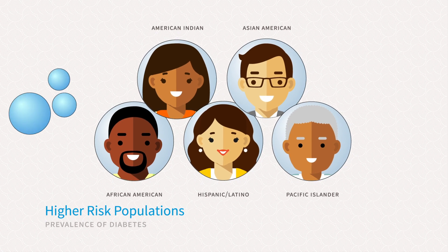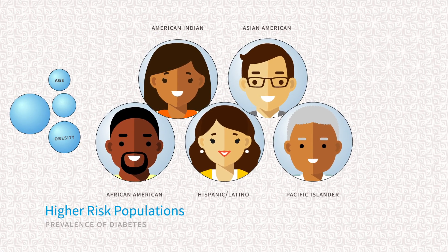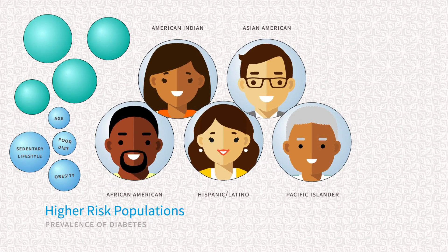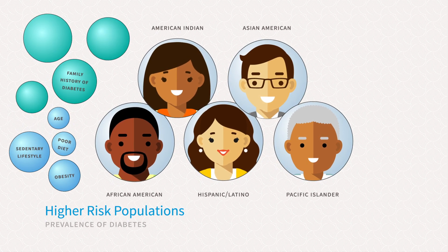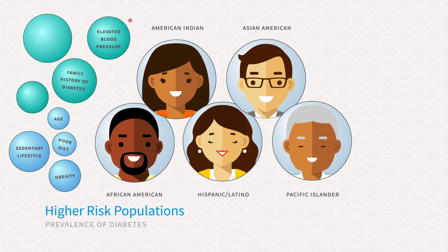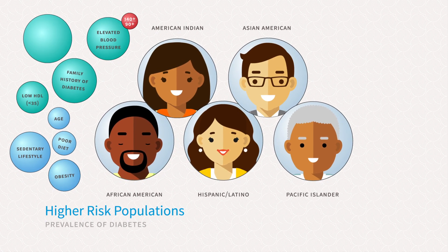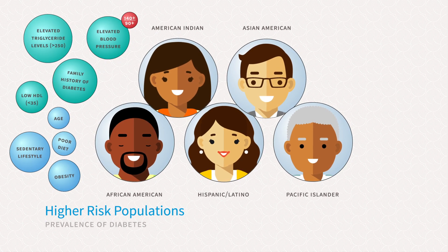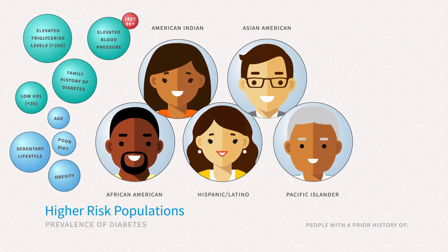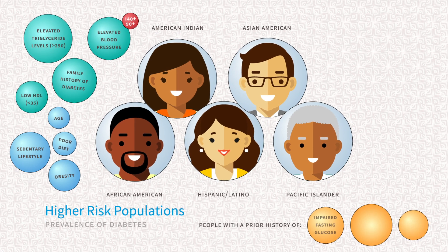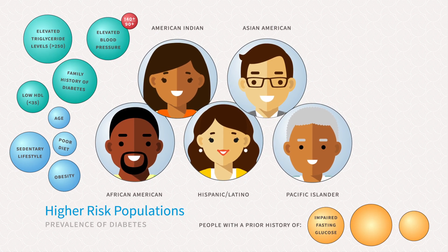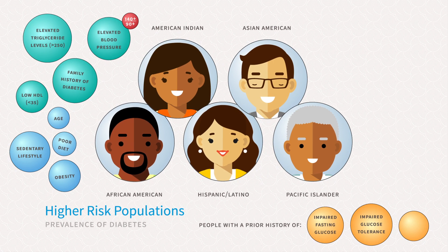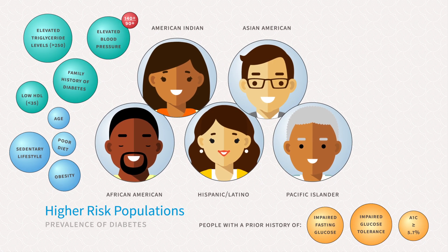Risk for diabetes increases with age, obesity, poor diet, or a sedentary lifestyle. It is higher in individuals with a family history of diabetes, elevated blood pressure of 140 over 90, low HDL less than 35, elevated triglyceride level greater than 250, and a prior history of either impaired fasting glucose (IFG), impaired glucose tolerance (IGT), and/or hemoglobin A1c of 5.7% and above.